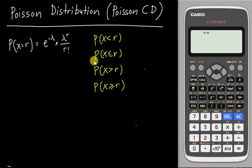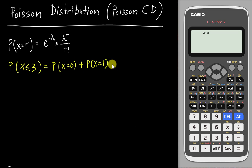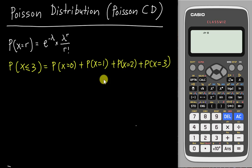If we have the inequality sign, how are we going to simplify the formula so that we can work really fast? I'm going to teach you how to simplify it. As an example, let's say today I have X is less than or equal to 3. If you learned about cumulative distribution, you know this basically means X equals zero plus X equals one plus X equals two plus X equals three. Definitely we're not going to apply the formula four separate times, so this is the reason I want to show you how to simplify it. But first, let me show you the original method.